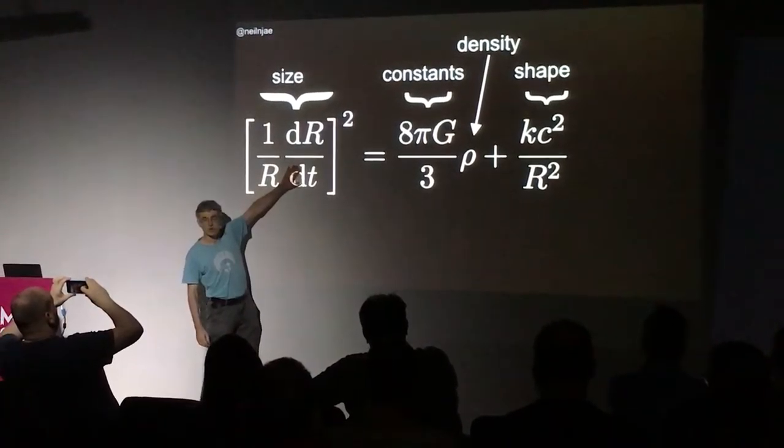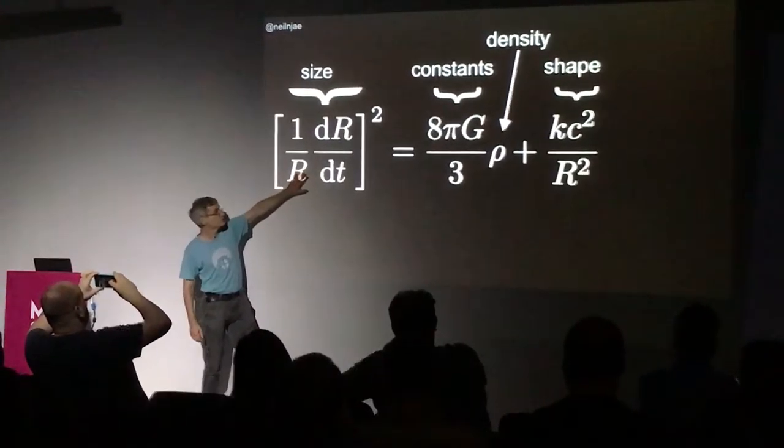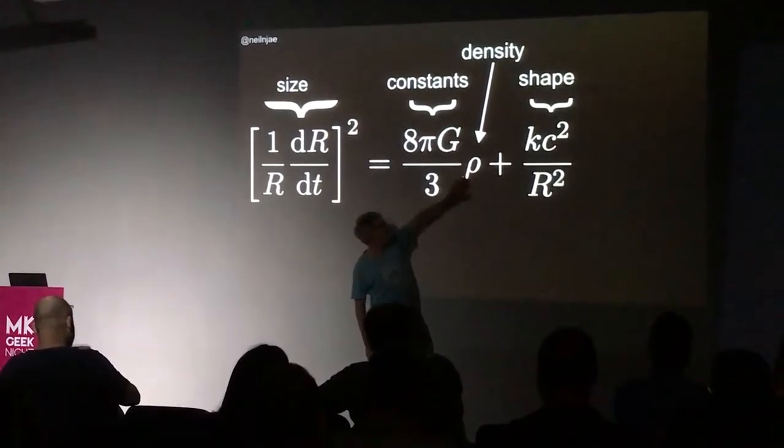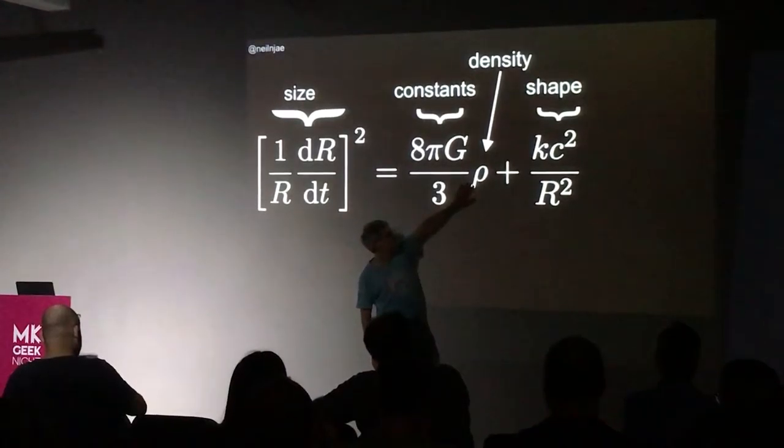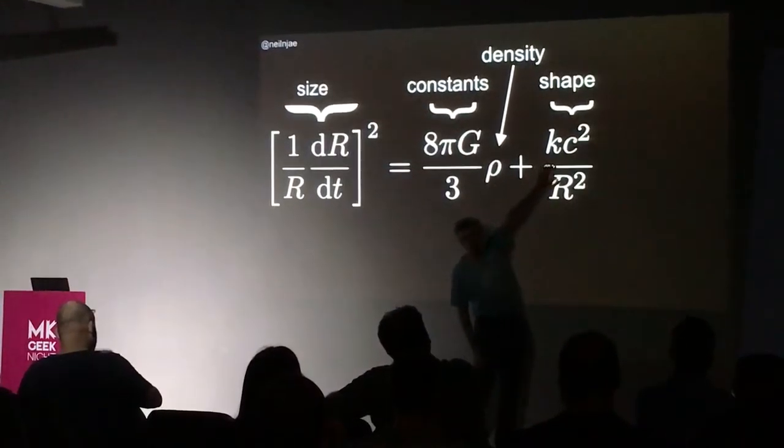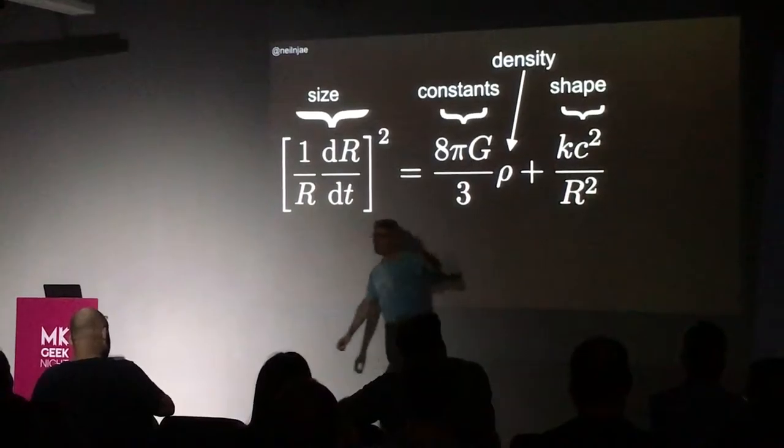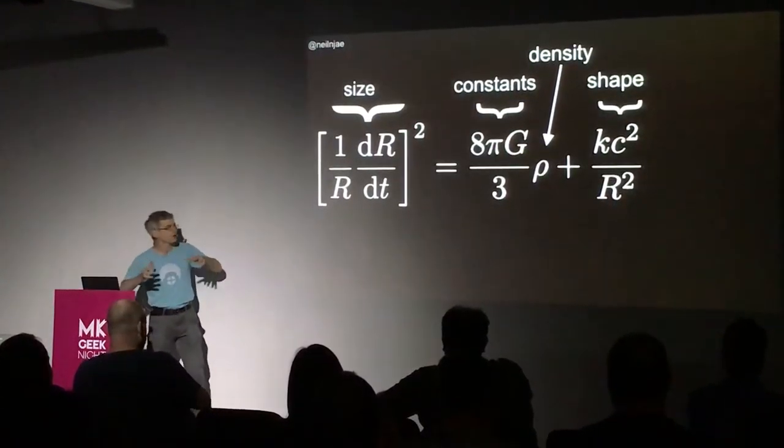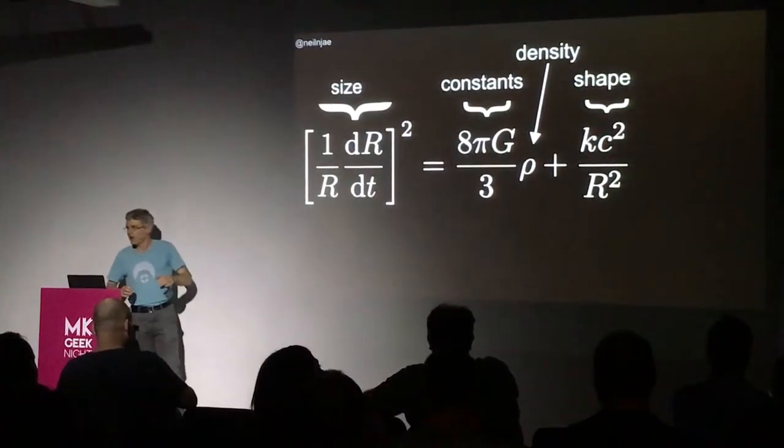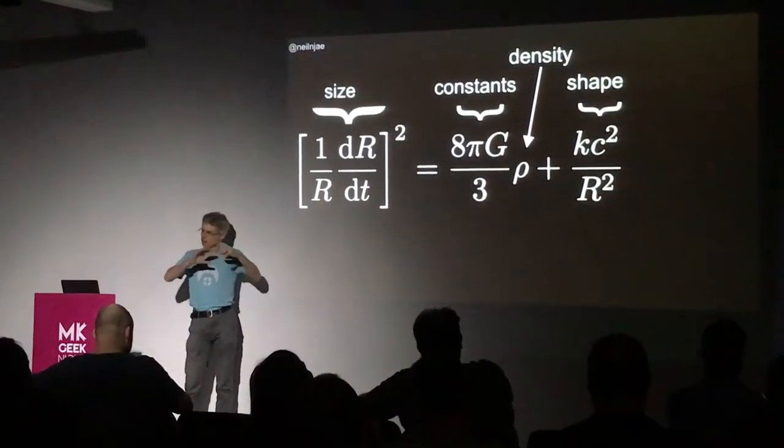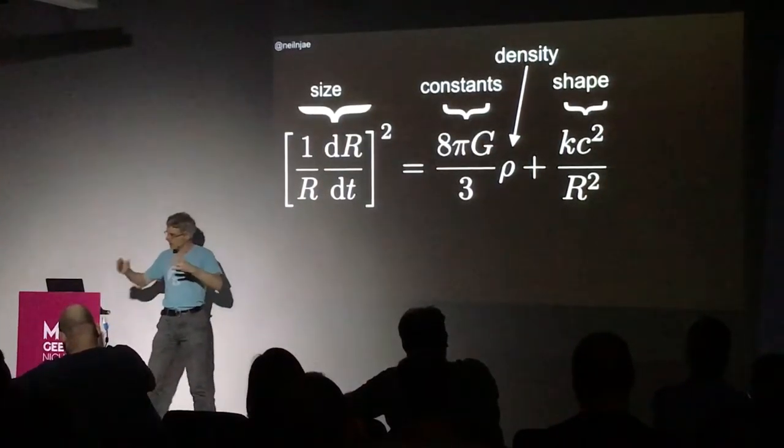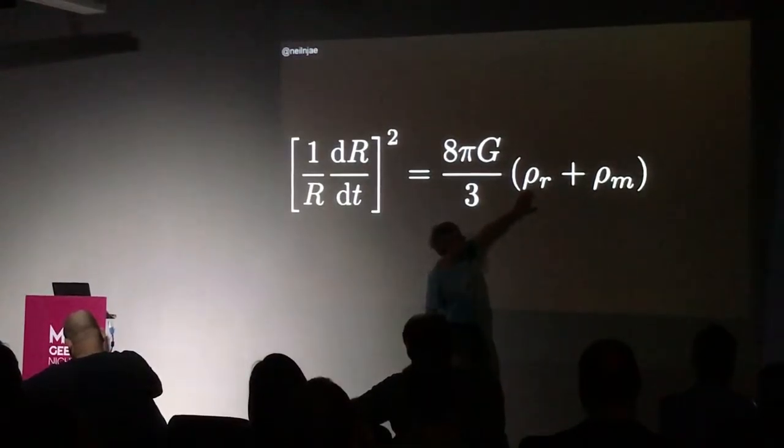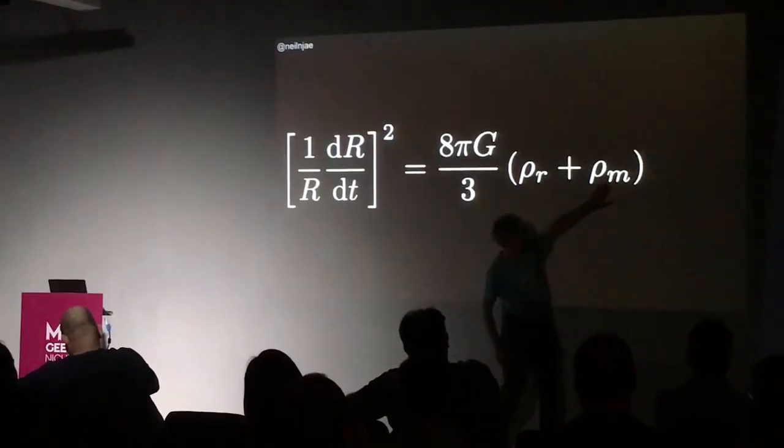This bit here is talking about the size of the universe. Here's a bunch of boring constants that I care about. This row is the density of mass energy in the universe, this is how much stuff there is in here. And this is a bit about the shape of space. Now it turns out that space is completely flat, in the same way that the surface of a cylinder is completely flat. So that last bit disappears. The density depends on how much stuff there is and how big the universe is.